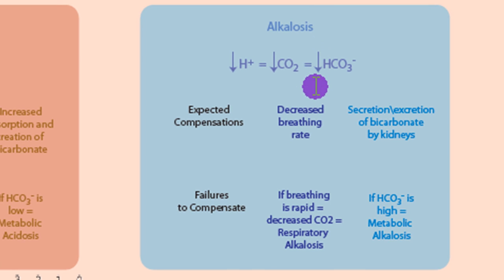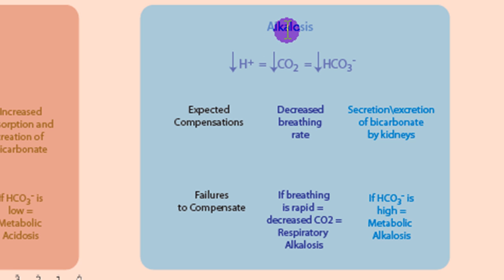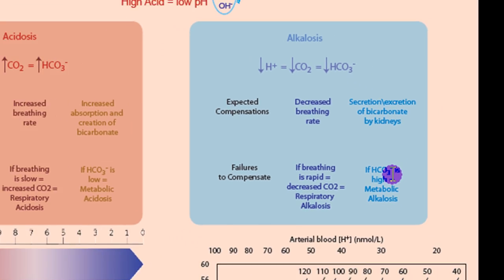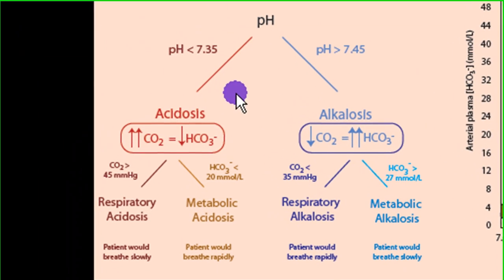On the side of alkalosis: we have low acid, low CO2, and low bicarbonate to keep things balanced. We expect a decreased breathing rate to retain more CO2, which will raise H+ and bring pH back down, resolving the alkalosis. We'd also expect the kidneys to excrete bicarbonate, so bicarbonate levels should go down. If breathing is rapid when it should be slow, this is respiratory alkalosis. If bicarbonate is high when we actually want it low, that's metabolic alkalosis.